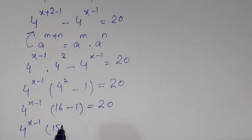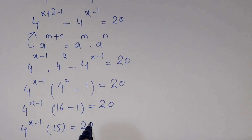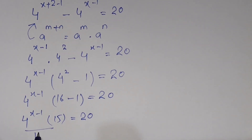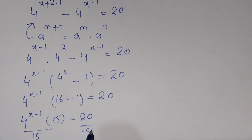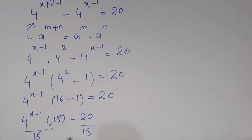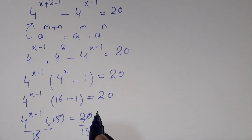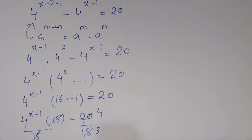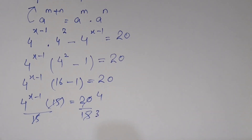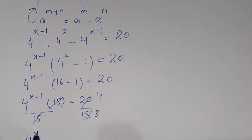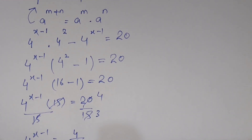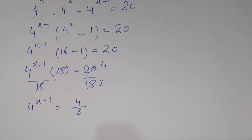So 4^(x-1) times 15 equals 20. We will divide both sides by 15. 15 cancels, giving us 20/15 which simplifies to 4/3. We are left with 4^(x-1) equals 4/3.